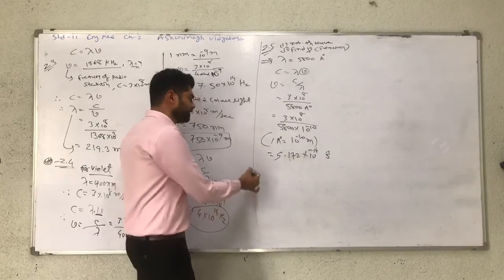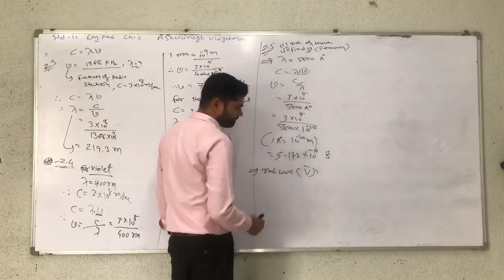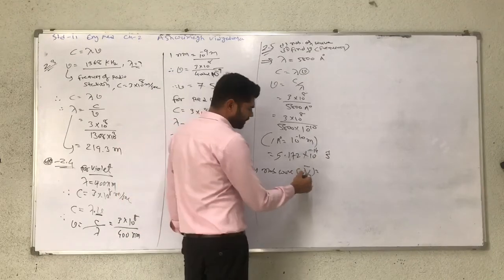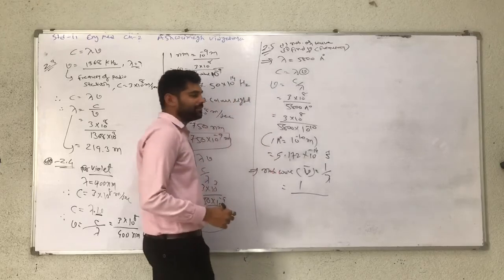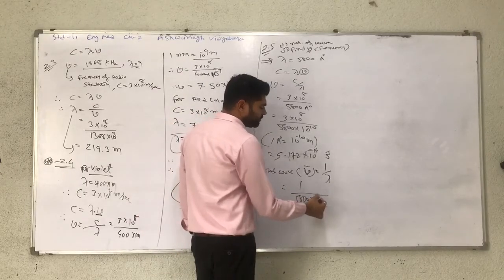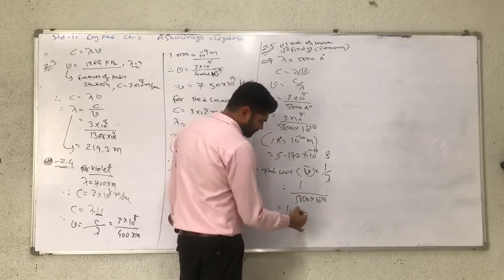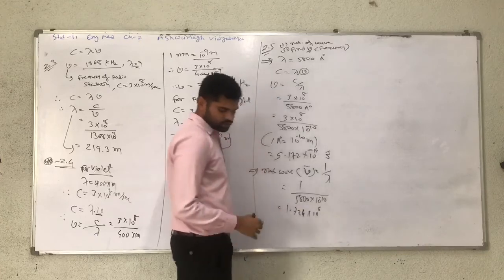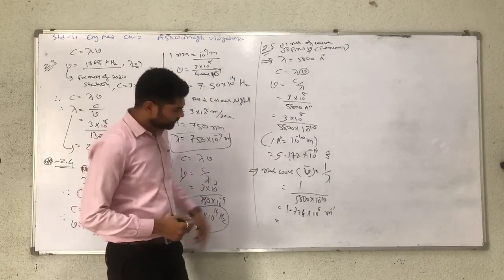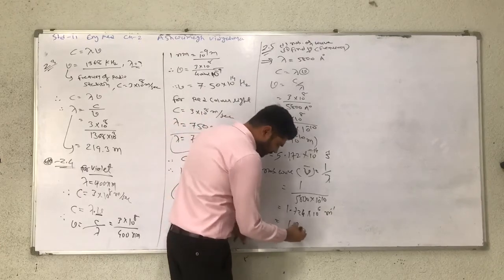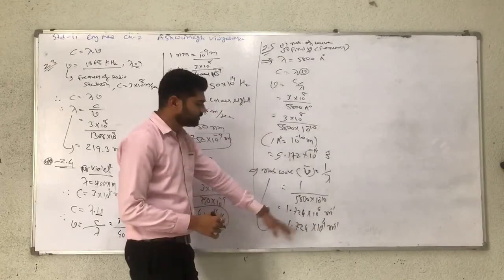So, frequency is 5.127 into 10 raise to 14. Now, to find the number of waves, the wavenumber nu-bar is equal to 1 divided by lambda. The value of lambda is 5.00 Angstroms, which equals 5.00 into 10 raise to minus 10 meters. After calculation, the wavenumber is 1.724 into 10 raise to 6 per meter. Converting to centimeter units gives 1.724 into 10 raise to 4 per centimeter. So, the number of waves is equal to 1.724 into 10 raise to 4.